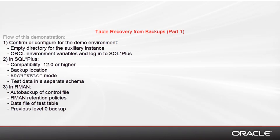In more detail, in this first demonstration, we confirm and configure the empty directory for the auxiliary instance that RMAN automatically creates, and that we are using the Oracle environment variables correctly. Then we log into SQL Plus, where we check compatibility is set to 12.0 or higher. We confirm the backup location, that archive log is enabled, and that the test data we expect exists. Then in RMAN we check that auto backup of the control file is enabled, the RMAN retention policies, that we have the data in the test table that we expect, and overall that we have a level 0 backup.